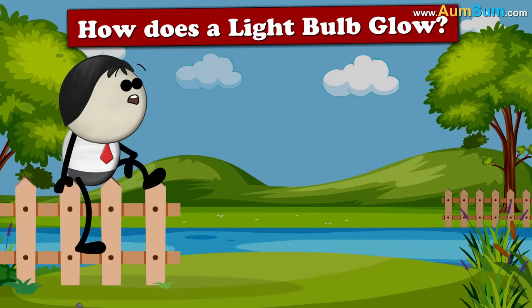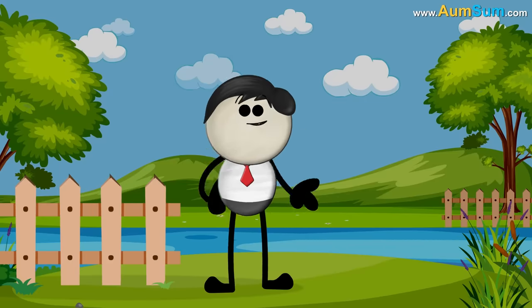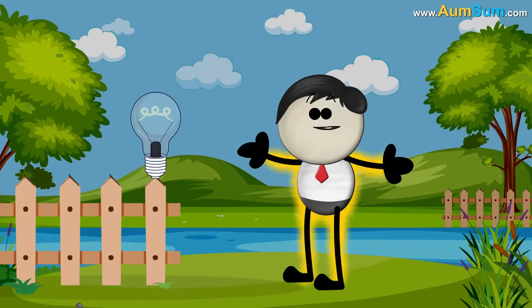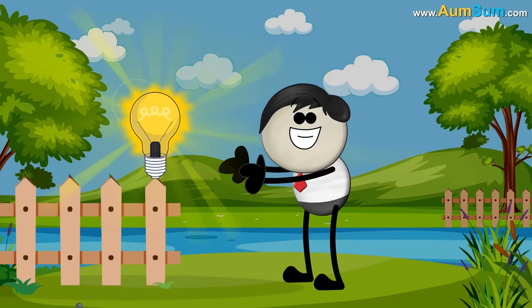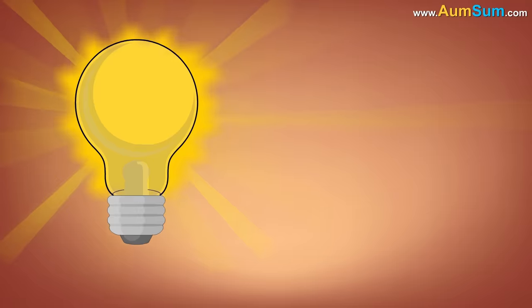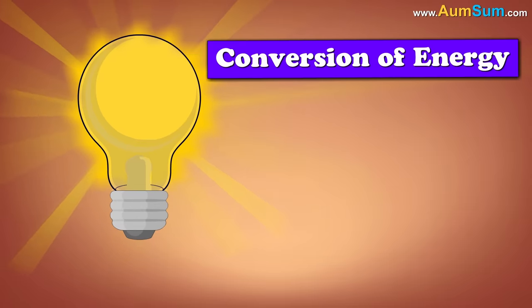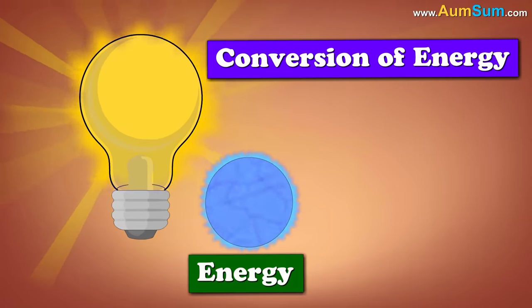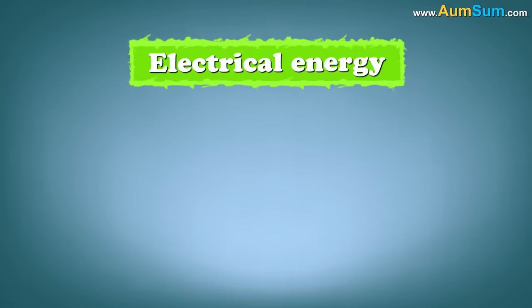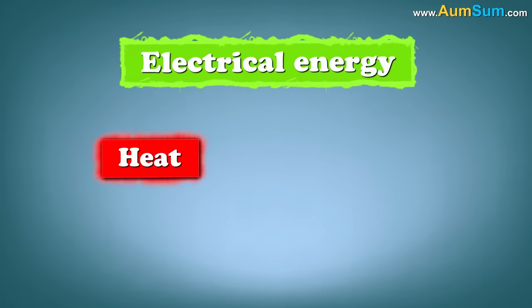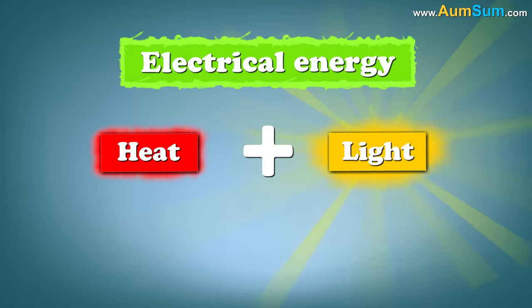How does a light bulb glow? Simple. It glows because of AumSum's brightness. Oh AumSum. A light bulb glows because of the principle of conversion of energy which states that energy is converted from one form to another. In this case, electrical energy is converted to heat plus light. Let us see how this happens.